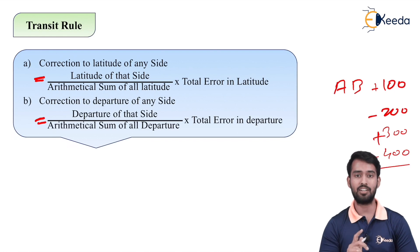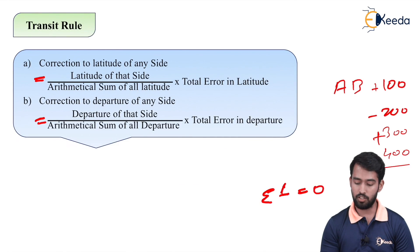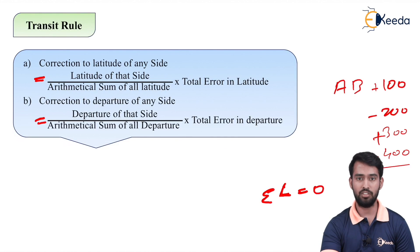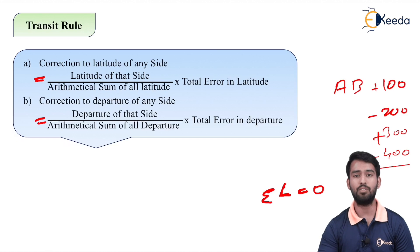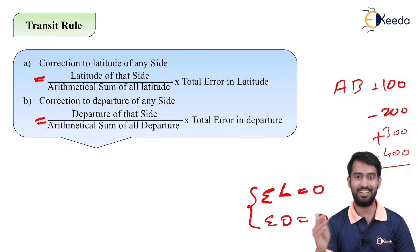After finding the corrected latitude and departure, we add or subtract them to get the summation of latitude equal to zero. If latitude is positive it is North, and negative means South. Similarly for departure: East is positive and West is negative. The summation of latitudes should be zero and summation of departures should be zero. We have to verify this once again after correcting the latitudes and departures. Thank you.